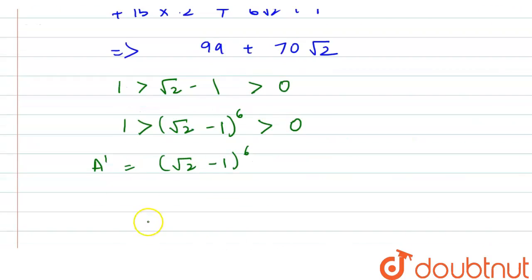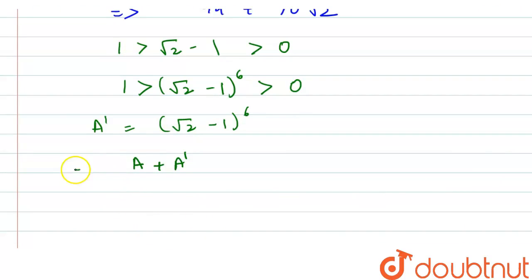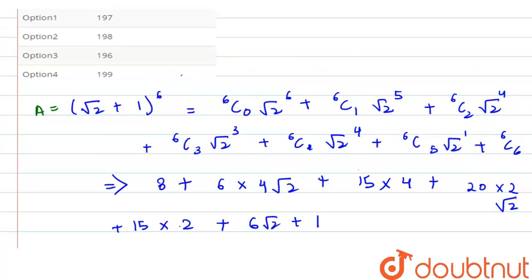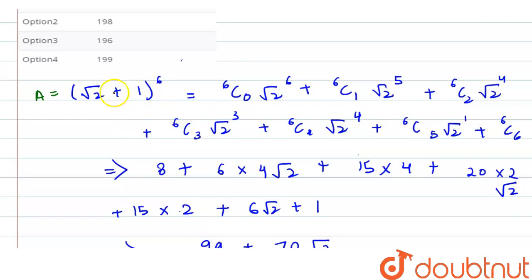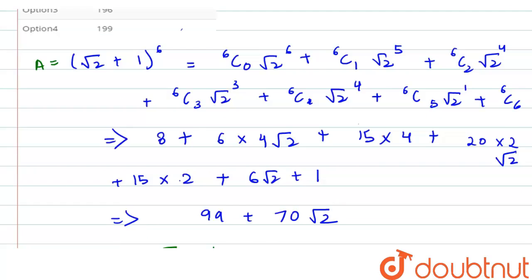So now let us add a + a'. Our a is (√2 + 1)^6 and a' is (√2 - 1)^6. So to find √2 - 1 here, in this expansion if we will write here minus, then accordingly our equation will be changed.